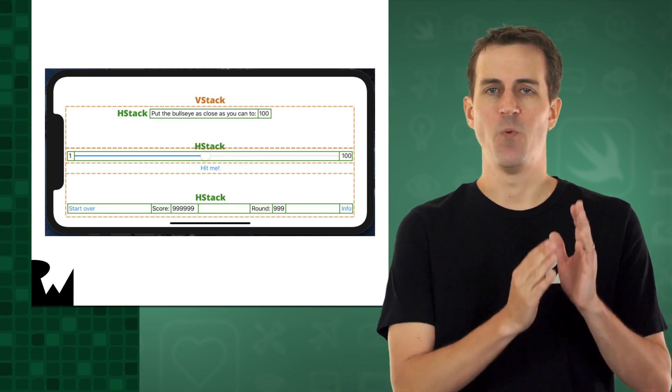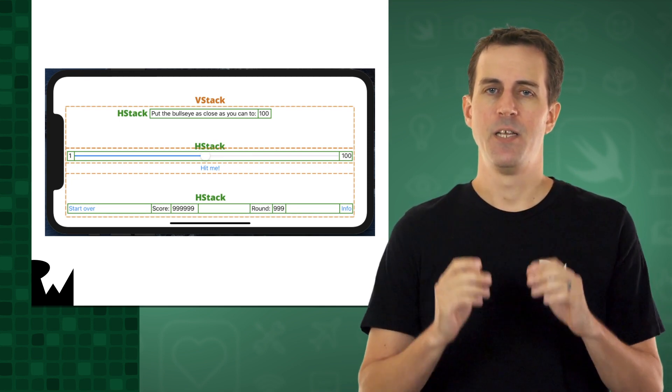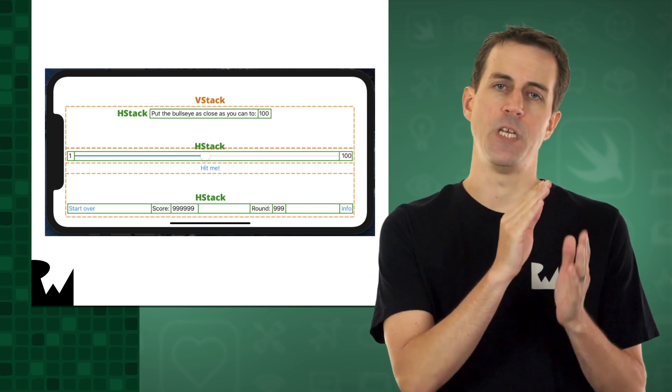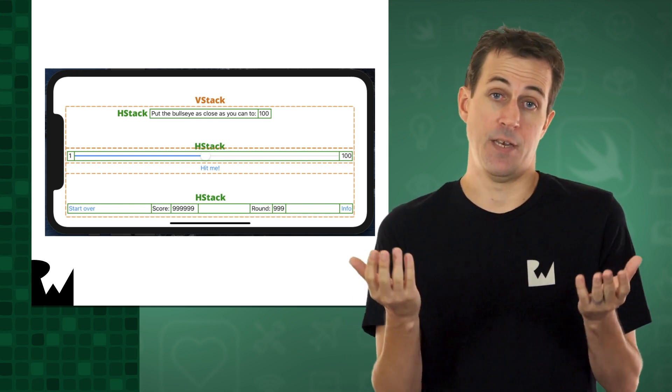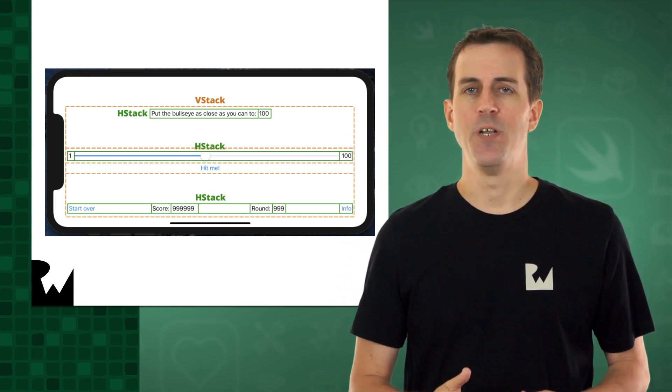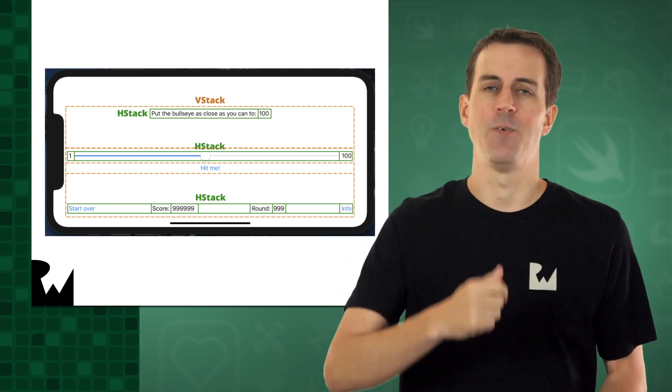You'll also need to arrange some rows side by side. To do this, you'll use a new view called HStack, which arranges its children views into a horizontal stack, hence the name. You'll use three HStack views, and you'll put each one inside a VStack container, as you can see here.